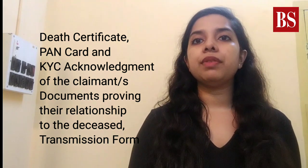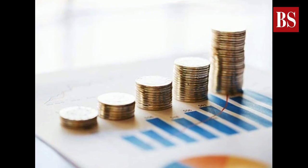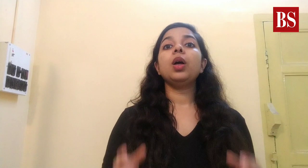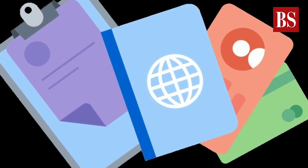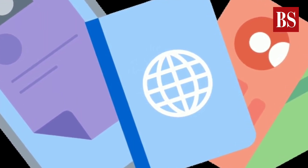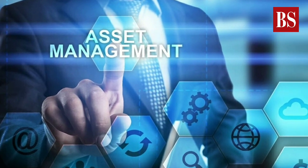Number 3: Mutual Funds. The procedure requires heirs to first produce certain documents, including death certificate, PAN card and KYC acknowledgement of the claimants, documents providing their relationship to the deceased, and a transmission form. After that, the process will vary based on whether the transmission amount is above or below 2 lakh rupees. Probate is the term for a legal process in which a will is reviewed to determine whether it is valid and authentic. If the transmission amount is more than 2 lakh rupees, apart from individual affidavits, production of a succession certificate, probate, or letter of administration is mandatory, as against a bond of indemnity. Upon transmission, the unit stands as a valid discharge by the asset management company.